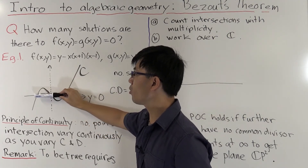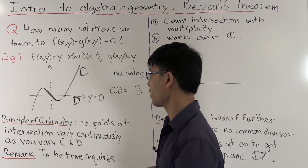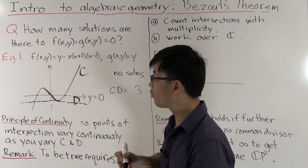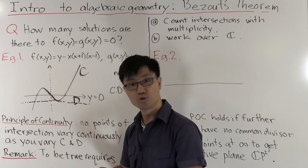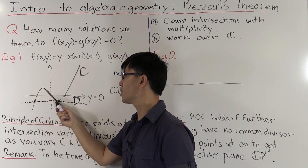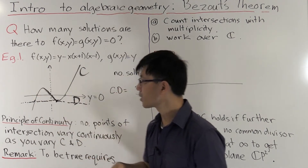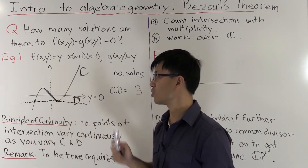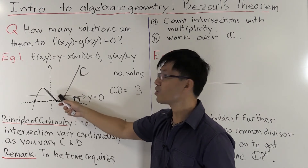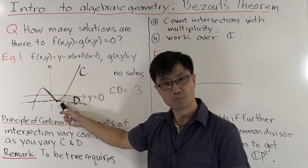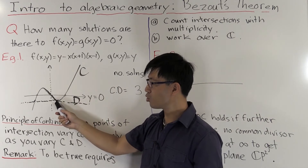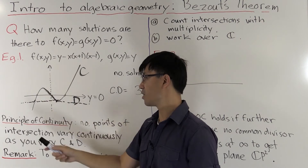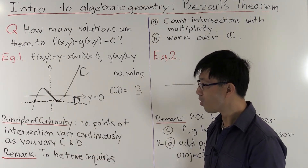When you go all the way down, we only have two visible points of intersection. However, one intersection is a tangential intersection, so we think of it as a point of intersection of multiplicity two. Counting that with multiplicity two gives two plus one — still three points of intersection. So the principle of continuity can be said to still hold here.